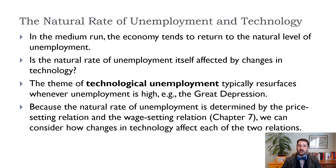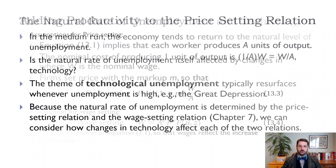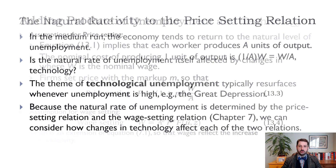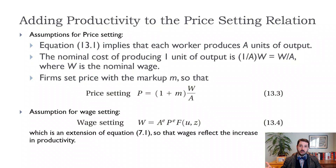Let's think about what our price-setting and wage-setting relations say about the relationship between technology and the natural level of unemployment. The nominal cost of producing one unit of output is the wage divided by productivity — W divided by A. We set A equal to one earlier, but when talking about technology we need to think about how much each worker is producing. If a worker earns $10 an hour and produces one unit per hour, marginal cost is 10. But if they can produce two units, marginal cost falls to 5 — that is, 10 divided by 2.